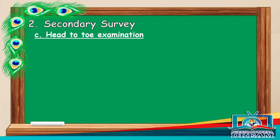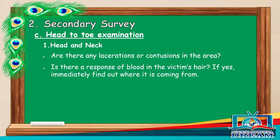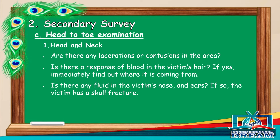Head to toe examination. 1. Head and neck: are there any lacerations or contusions in the area? Is there blood in the victim's hair? If yes, immediately find out where it is coming from. Is there any fluid in the victim's nose and ears? If so, the victim has a skull fracture.